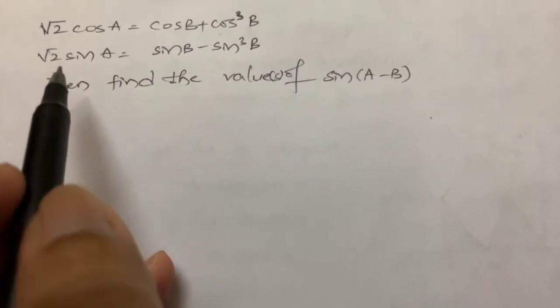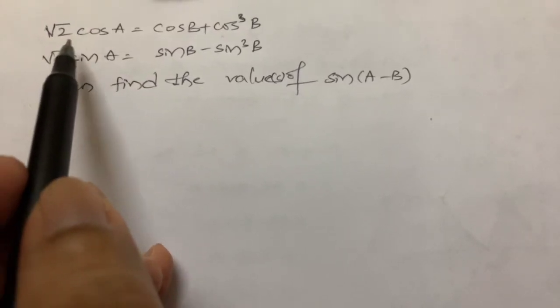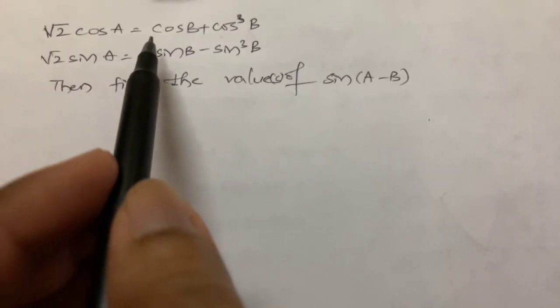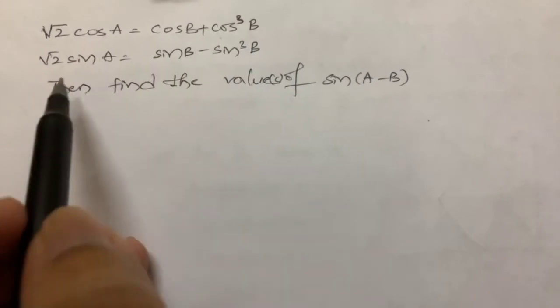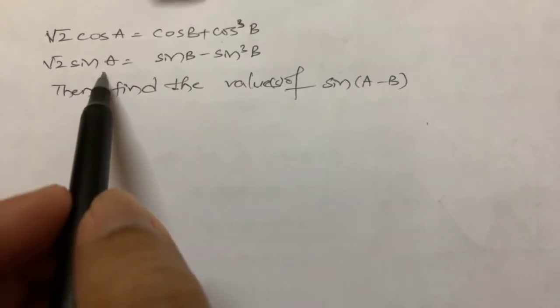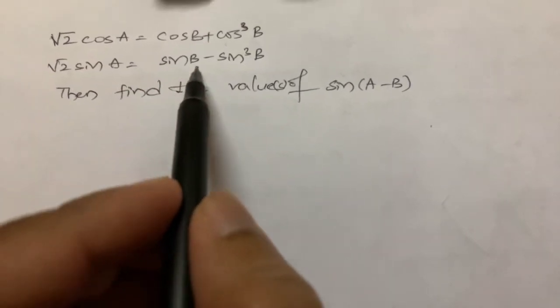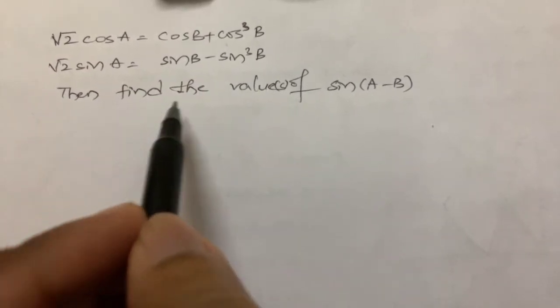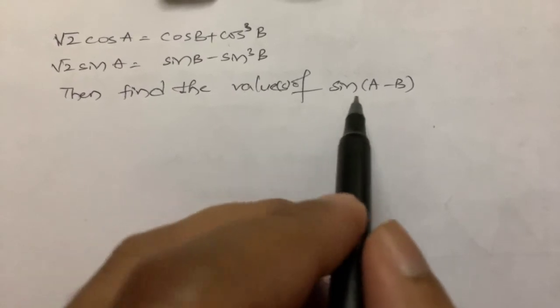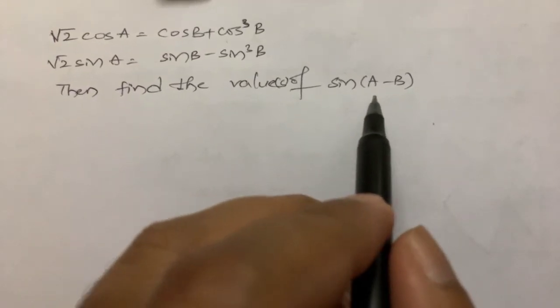Let us solve the problem. Root 2 cos A is equal to cos B plus cos cube B, and root 2 sin A is equal to sin B minus sin cube B. Then find the values of sin of A minus B.